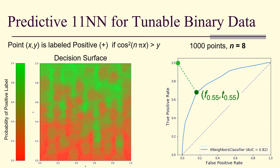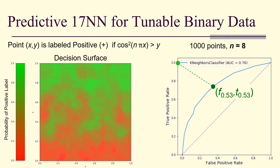Increasing to 11 nearest neighbors reduces the AUC to 0.82 with a threshold of 0.55. Going further to 17 neighbors, the decision surface becomes practically a blur, the AUC drops to 0.76, and the optimal threshold is 0.53.